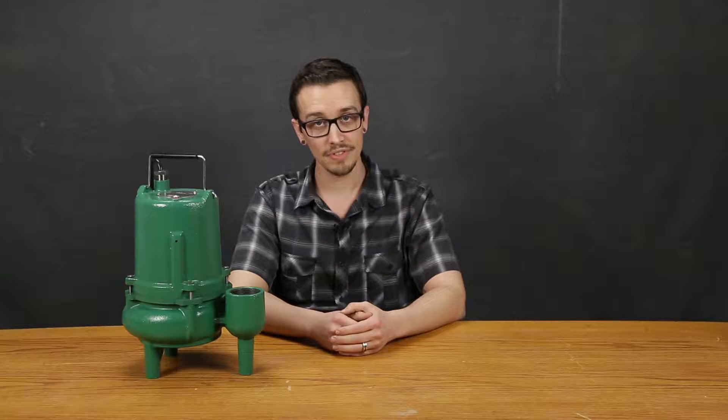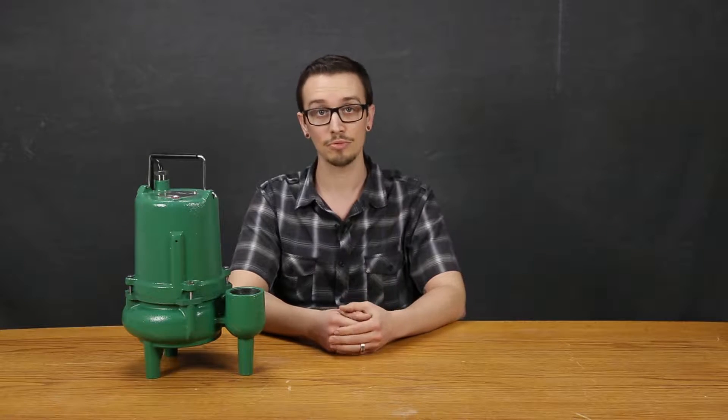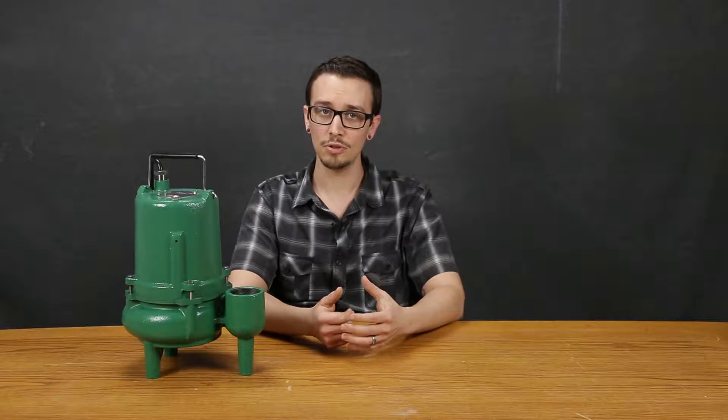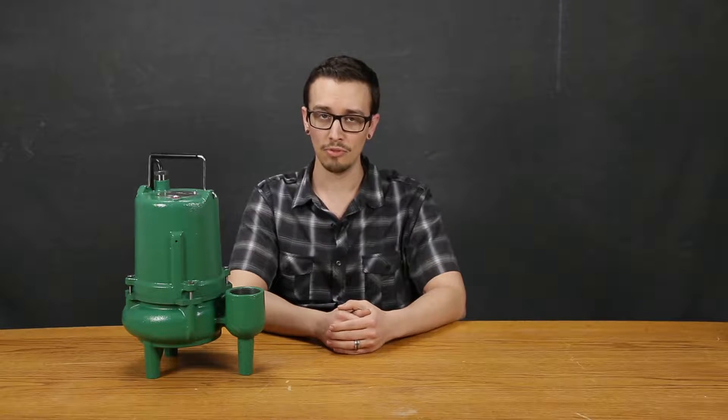The Myers MSKV50 boasts a 1.5 horsepower motor that comes in either 115 or 230 volts and is rated at 12 or 6 full load amps respectively. At the standard 1750 RPM the pump can produce 22 feet of head at a maximum flow rate of 180 gallons per minute.